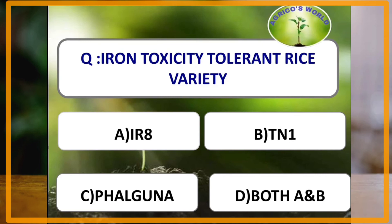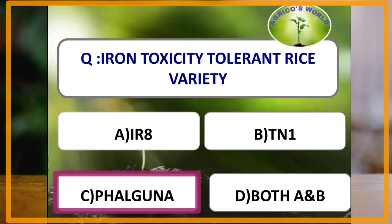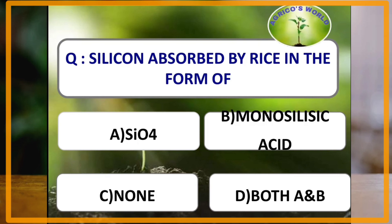The iron toxicity tolerant rice variety is Falguna. When there is increased iron toxicity, it leads to browning of rice, with symptoms appearing as purple-colored leaf tips which later become dried and give a scorched appearance. Silicon is absorbed by rice in the form of monosilicic acid. Silicon is a beneficial element that provides disease and pest resistance to the crop.